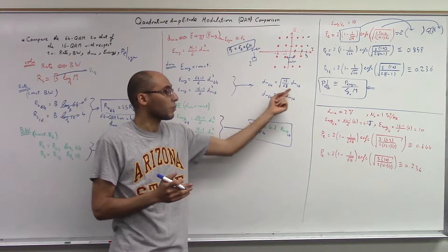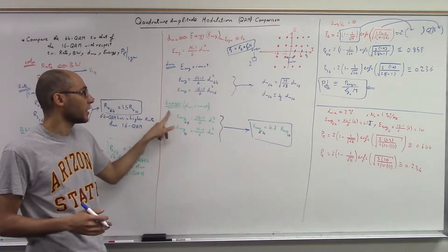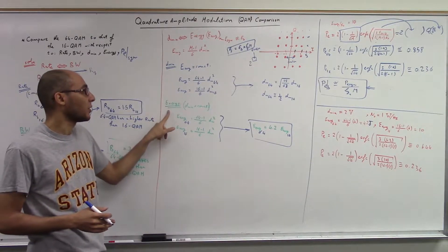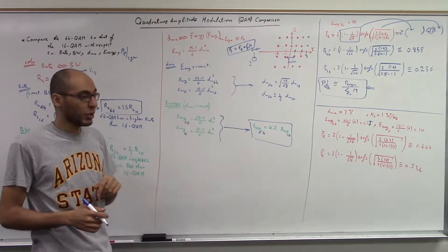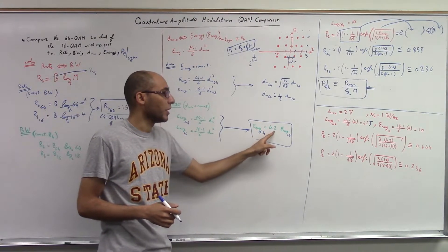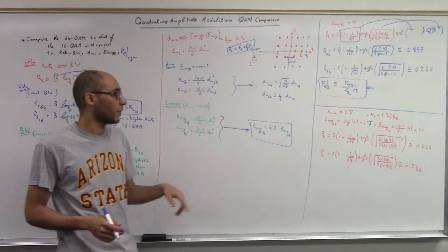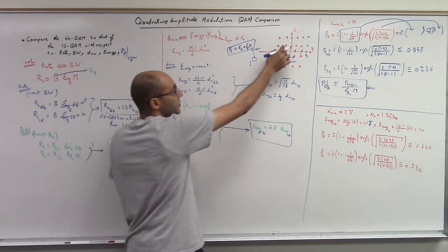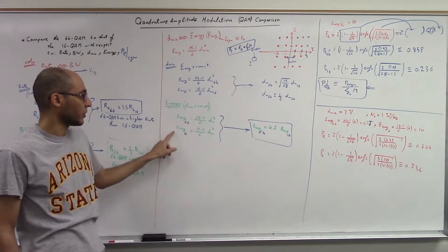Conversely, to increase the constellation size you must reduce the minimum distance to keep energy fixed. The other direction: if you want to calculate the energy given a fixed d minimum, the energy of 64-QAM increases to four times that of 16-QAM, because fixing d minimum while increasing constellation size increases energy.